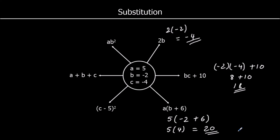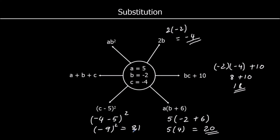c minus 5, quantity squared. c is negative 4. So it's negative 4 minus 5. Negative 4 minus 5 is negative 9. And negative 9 squared — negative 9 times negative 9 — is positive 81.